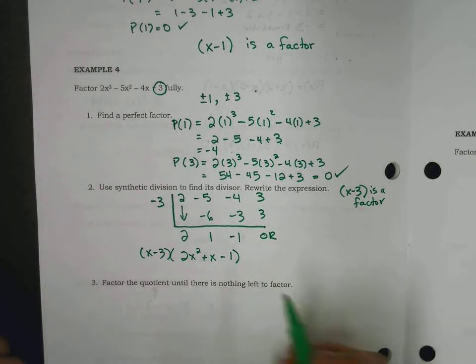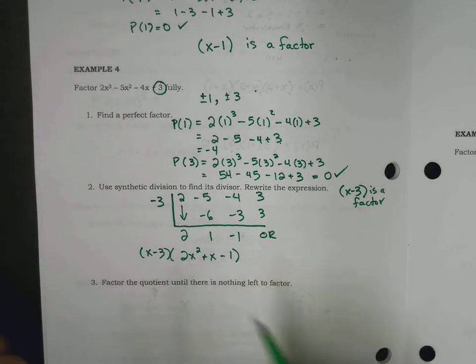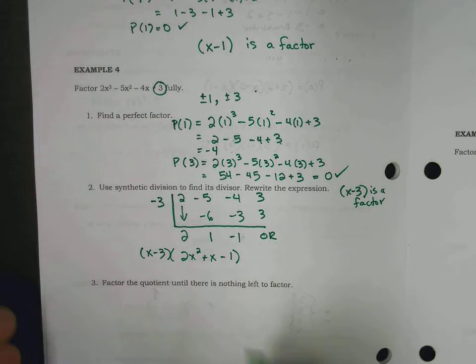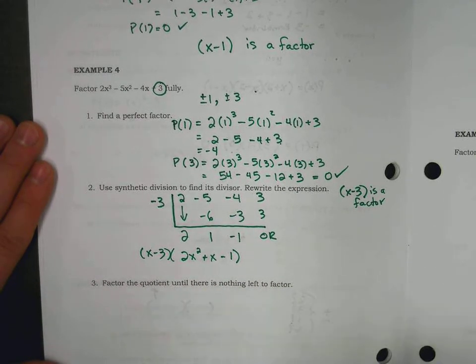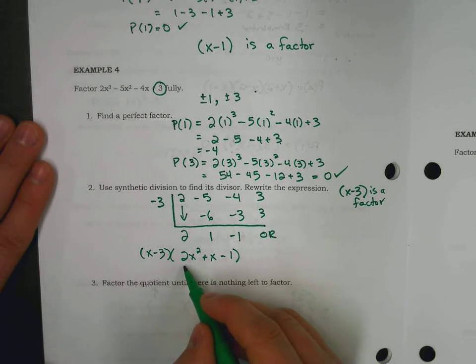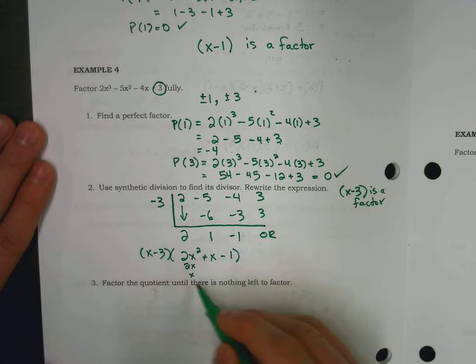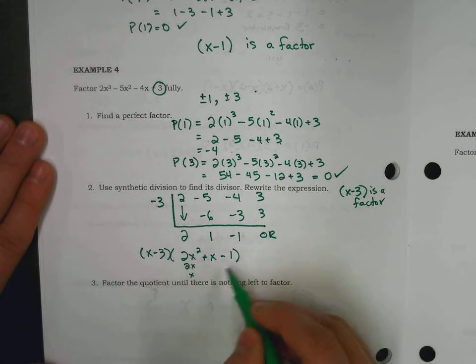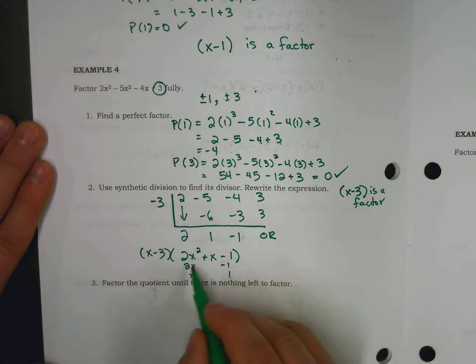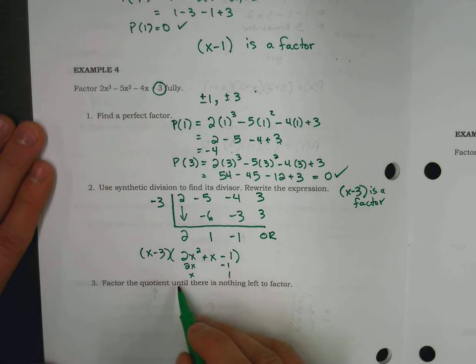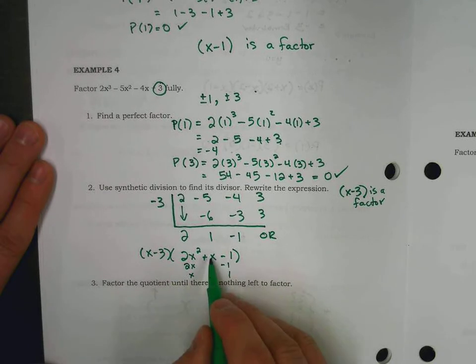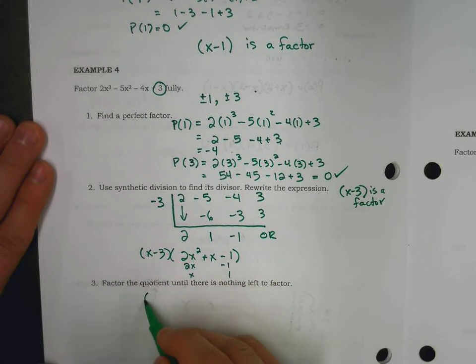And the hope is that this factors one step further, and in fact it does. So, the last step after this is to factor the quotient until there's nothing left to factor. And so, I factor this by looking at factors of the first term, factors of the last term, and they diagonally check out. 2x and negative x adds up to a positive x, which is your middle term, so we have our factors.